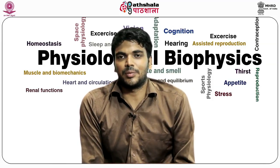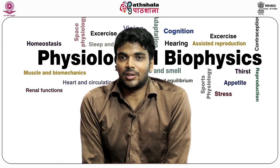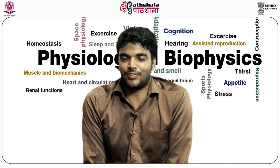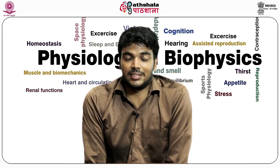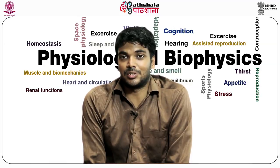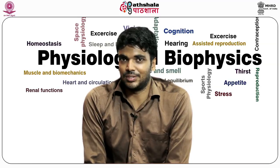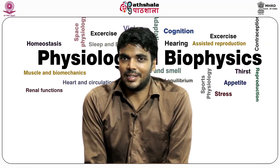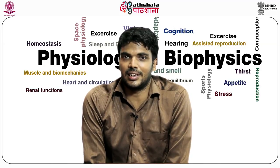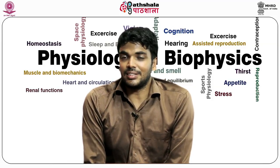In sensory ataxia, patients become dependent on visual and vestibular systems. Depriving them of visual information by closing the eyes causes the body to sway uncontrollably, since the somatosensory system is damaged and only the vestibular system contributes sensory information. This is called the Romberg sign — the inability to maintain a steady standing posture with eyes closed in patients with somatosensory ataxia.